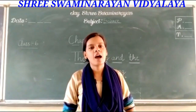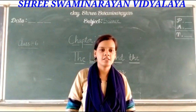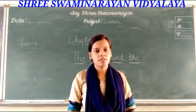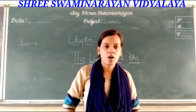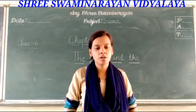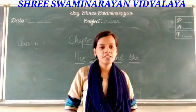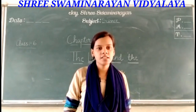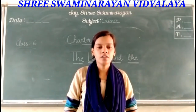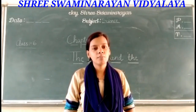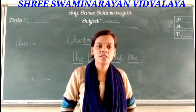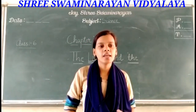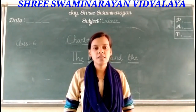Good morning students, I am Kalpana Yadav and I will be teaching you science. Let's start a new chapter — chapter number seven: The Living and the Non-Living. We see a variety of things around us like trees, tables, chairs, clothes, and human beings. These things are characterized as living things and non-living things. Both living things and non-living things occupy space because they are made up of matter.